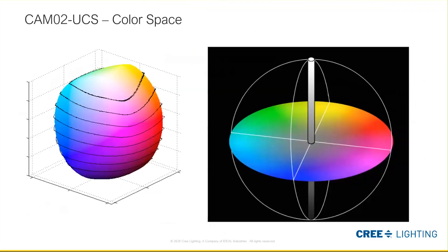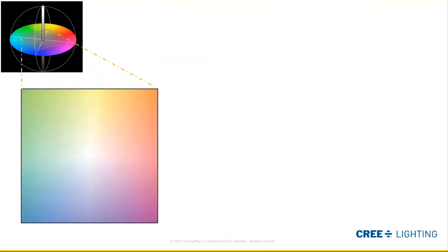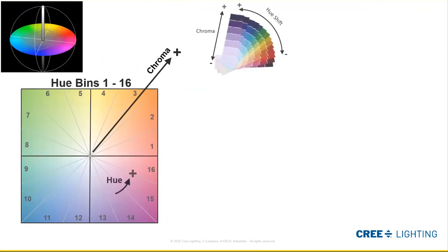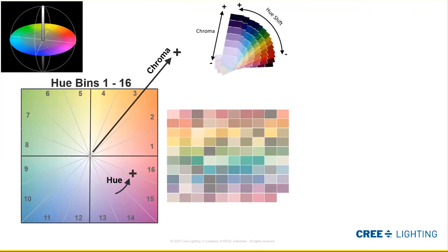TM30 uses a more accurate color space for calculating color performance. Imagine a portion of that color space projected into a new shape — as you move from the center vertex outward, things get more saturated. We call these 16 spaces hue bins, numbered 1 through 16, with chroma in the radial direction and hue in the angular direction. Keep thinking about that paint color swatch from your paint store experience.